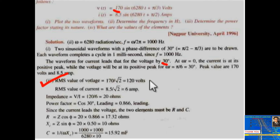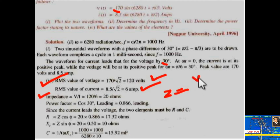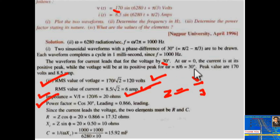RMS current equals 8.5 by root 2, which is 6 ampere. Impedance z equals V rms upon I rms, so 120 by 6 equals 20 ohm. Power factor equals cos phi — putting phi equal to minus 30 degree, and since cos minus theta equals cos theta, it becomes cos 30 degree. Since current is leading, power factor equals 0.866 leading.